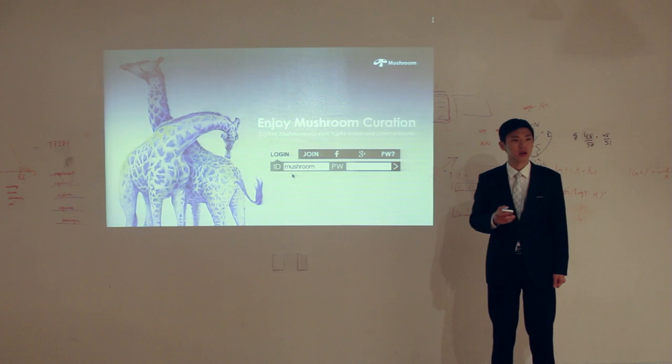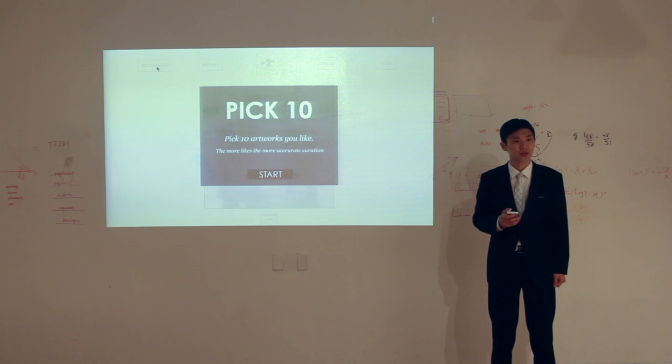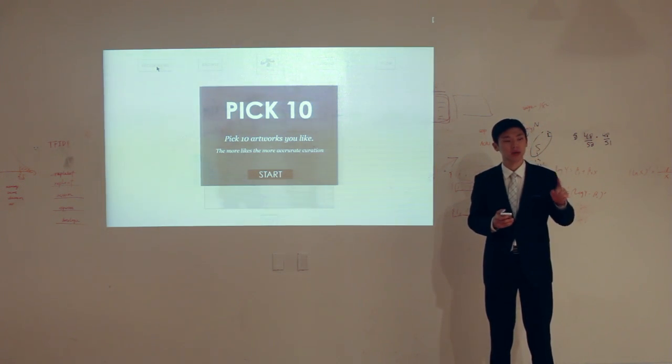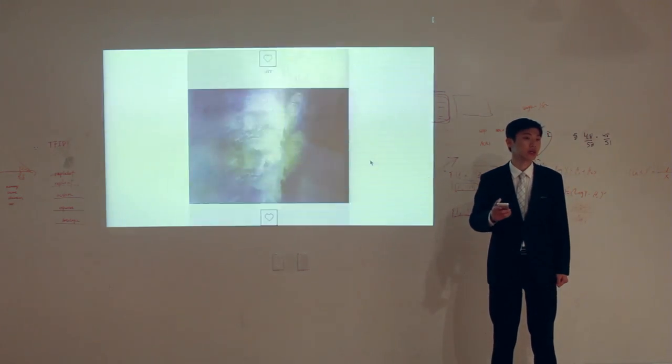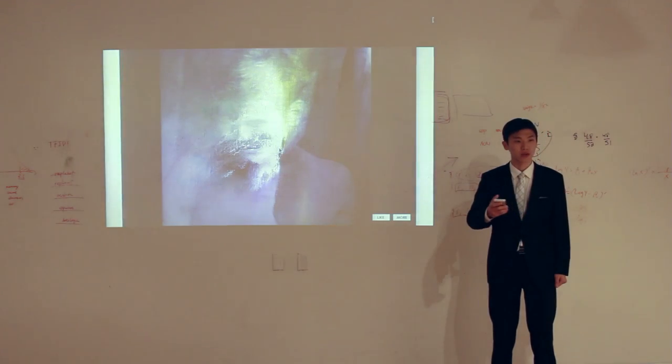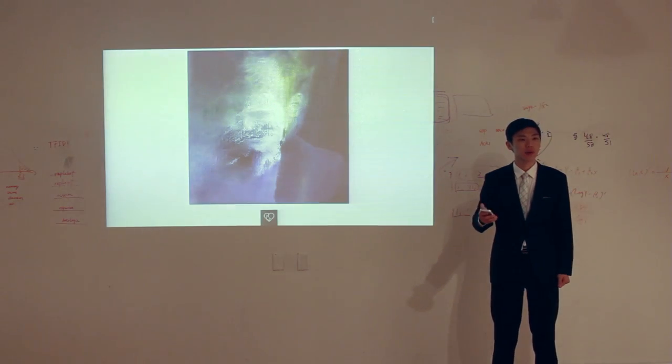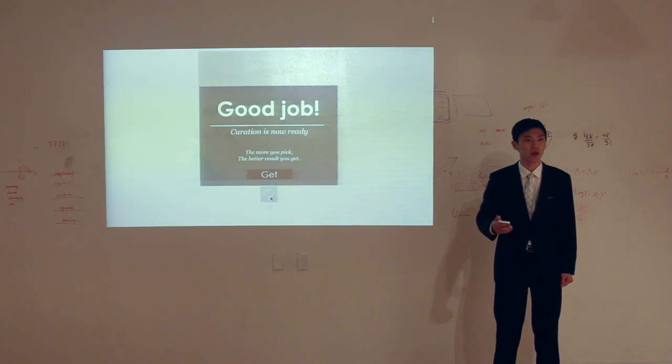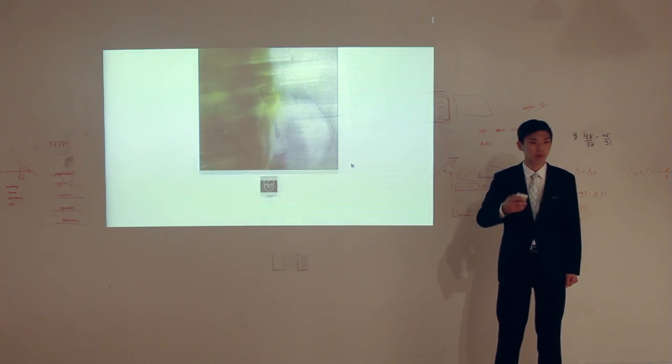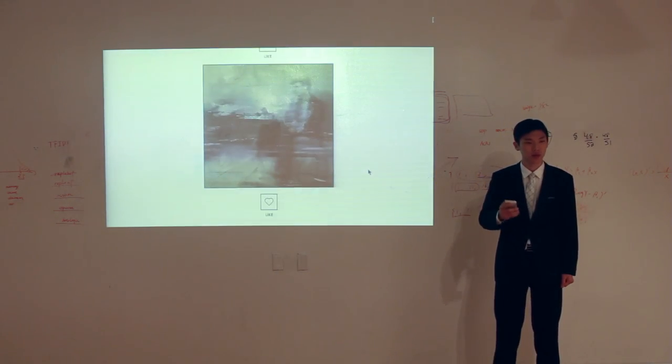Mushroom offers automatic curation service based on proprietary algorithm. The process is quite simple. As you can see on the screen, once you hit certain numbers of likes on random artworks coming from our archive, Mushroom analyzes the user's taste and comes up with specific recommendations among our pool. The more you hit on likes, the more accurate information you get.